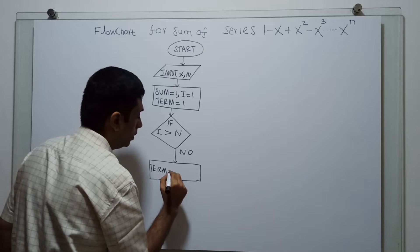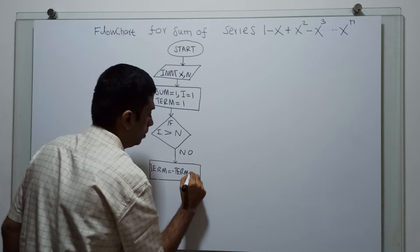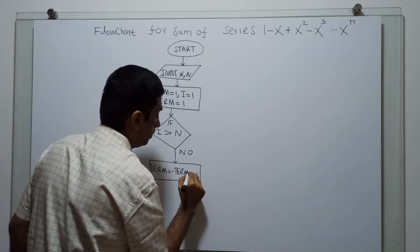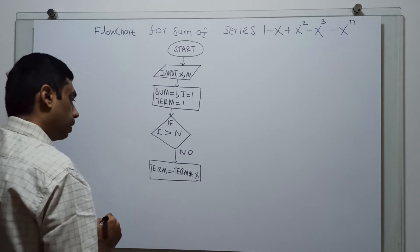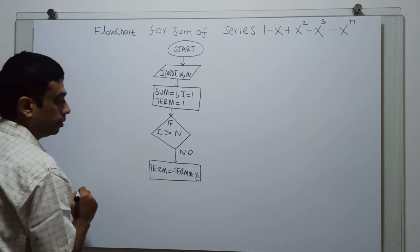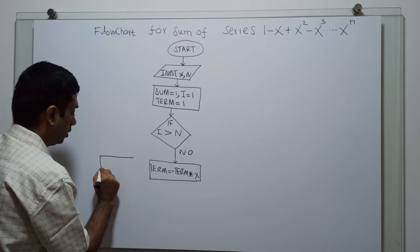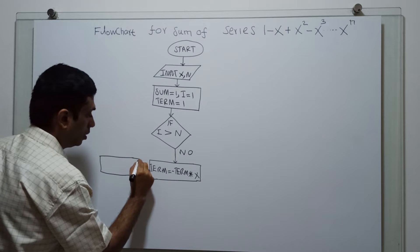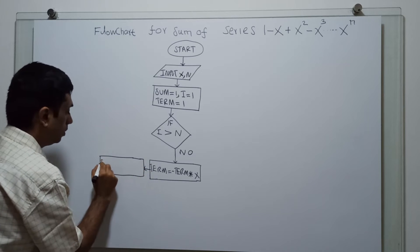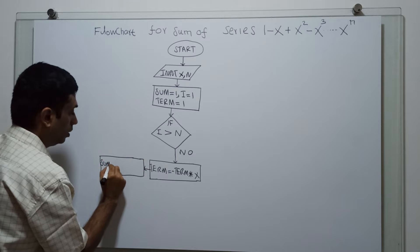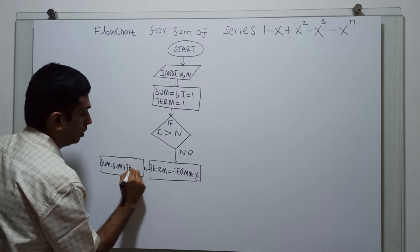If the condition is false (no), I calculate: term equal to minus of term into x. Then I calculate sum equal to sum plus term.